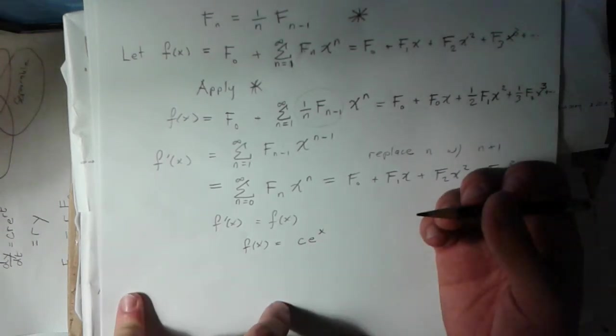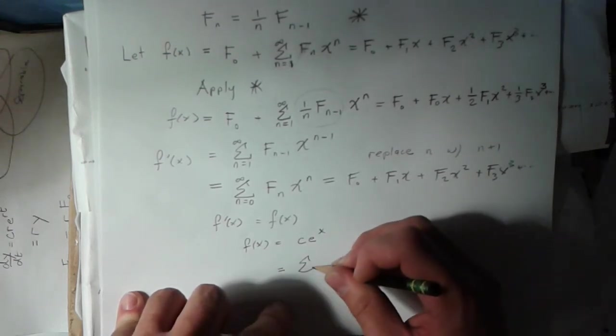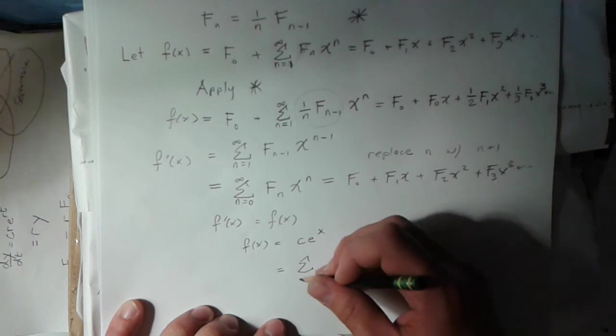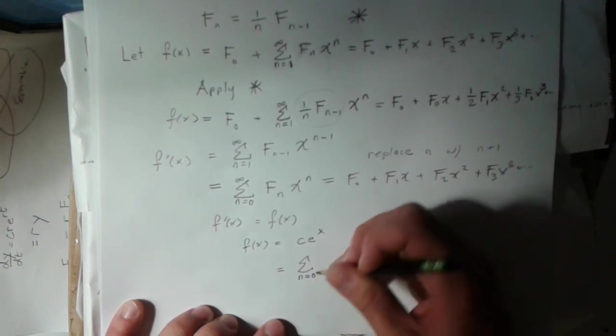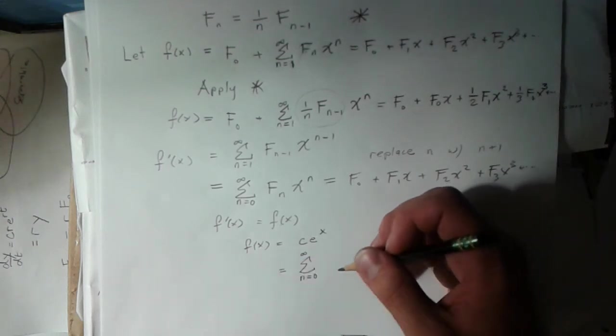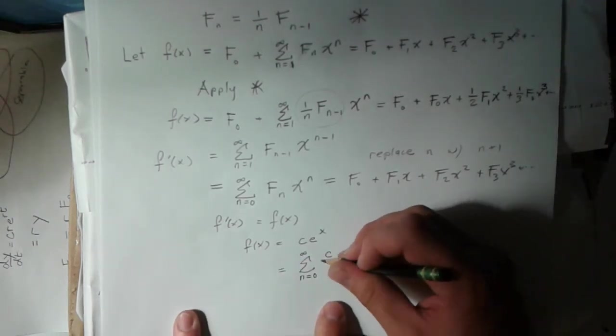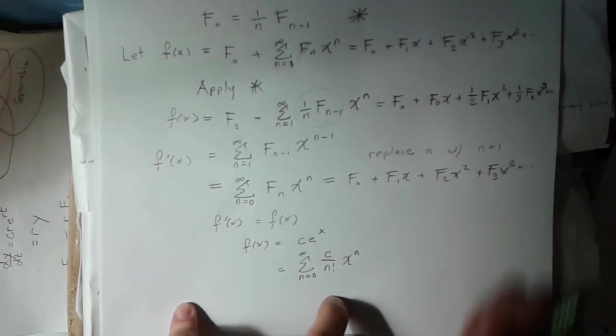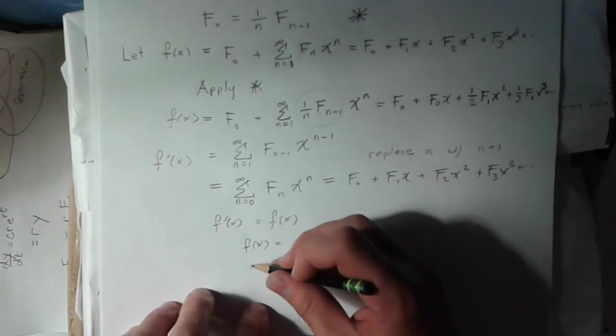I can write this as a power series. Since I know the Taylor series or McLaren series for e to the x, it looks like this. Since I have this constant, I can just pull this inside. This is just going to be c over n factorial x to the n.